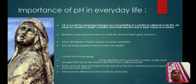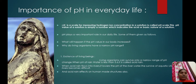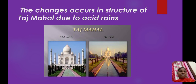When acid rain flows into rivers, it lowers the pH of the river water, making survival for aquatic life in such rivers very difficult. Acid rain also affects human-made structures. Here we can observe the Taj Mahal — before acid rain and after acid rain. The changes that occur in the structure of the Taj Mahal are due to acid rain.